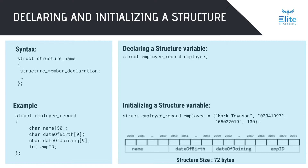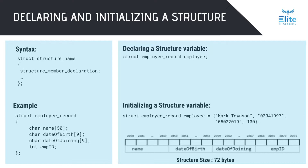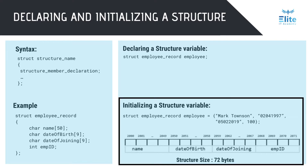A structure is allocated contiguous memory. In this case, 72 bytes of memory will be allocated to the structure variable, and each member is allocated memory contiguously. This is how you declare a user-defined type. Once a data type is defined, you can then declare variables with this data type. The variable employee has data type StructEmployeeRecord and will be allocated 72 bytes of memory. You can also initialize a structure variable — the declaration is followed by an assignment operator and an initializer list in curly braces, which contains constant initializers for each member.